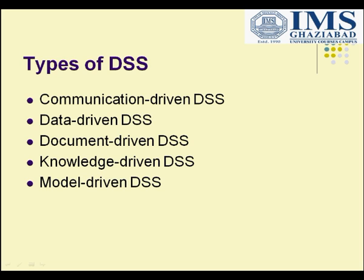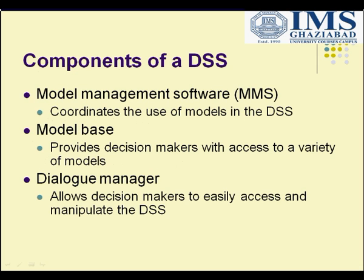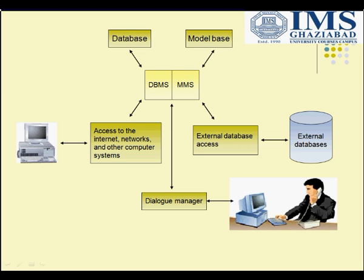Model-driven DSS uses data and parameters provided by users to assist decision-makers in analyzing a situation. There are three components of DSS. The first is Model Management Software, which coordinates the use of models in the DSS. The second is the Model Base, which provides decision-makers access to a variety of models. The third is the Dialog Manager, which allows decision-makers to easily access and manipulate the DSS. In the DSS architecture diagram, DBMS takes data from the database and MMS takes data from the model base. Internet, external databases, and the Dialog Manager together enable DSS to support decision-making.